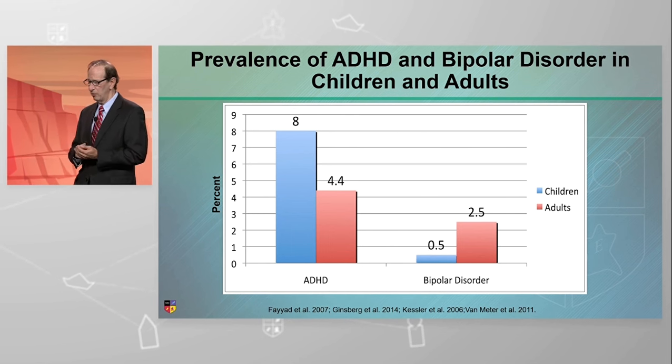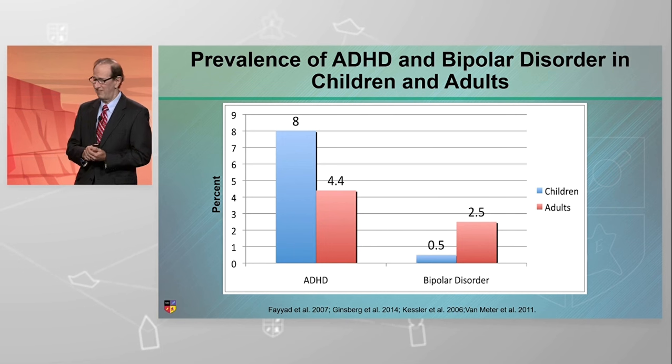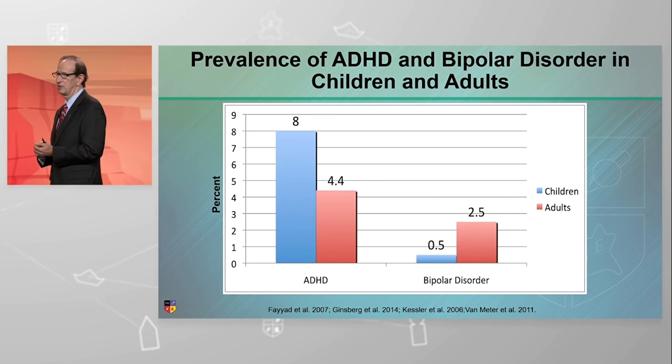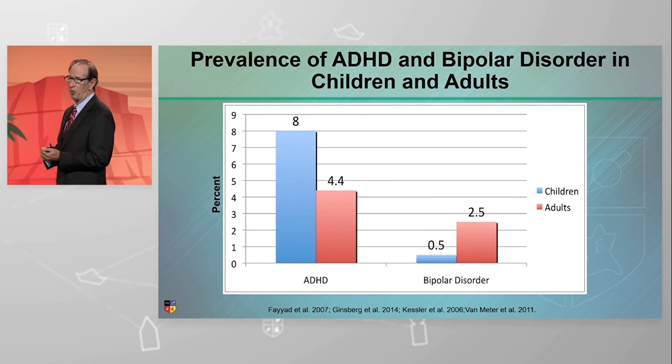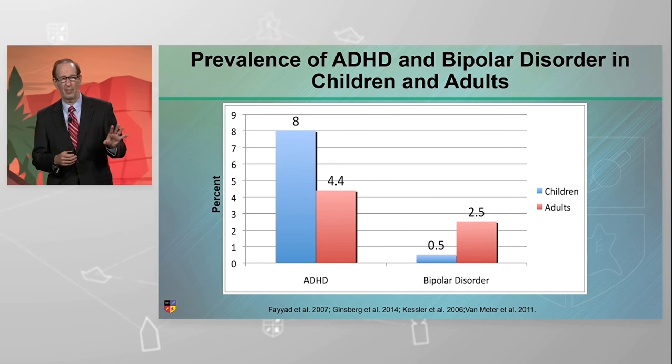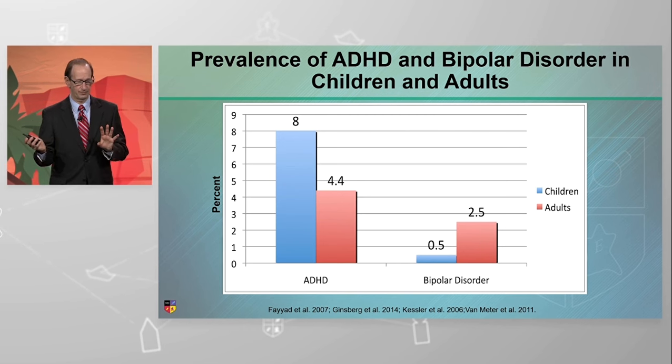For bipolar disorder in children, it's about 0.5%. And for adults, it's about 2.5%. That includes both bipolar I and bipolar II.